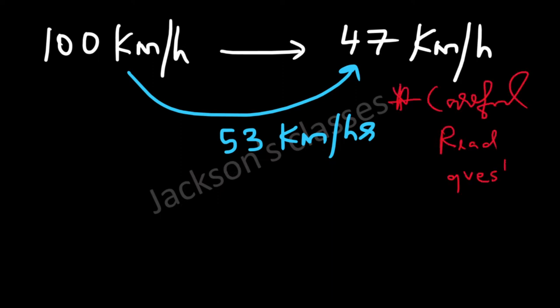So be careful to read the question accurately. Now we need to convert 53 km into miles so that we can get 53 km per hour in terms of miles per hour. Now it's given that 1 km is 0.625 miles. So 53 km will be 53 into 0.625 miles.